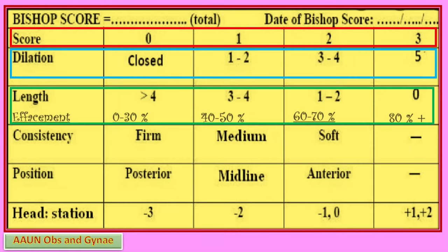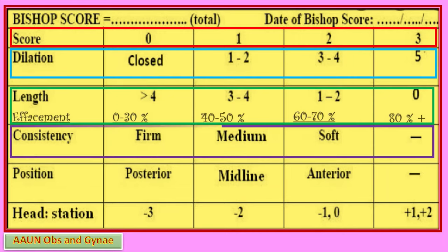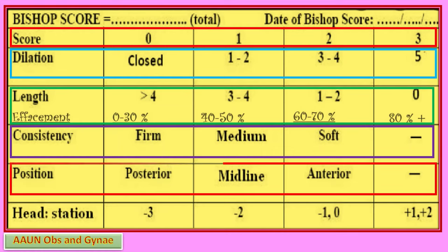Continuing Bishop's score: Consistency scores — 0 for firm, 1 for medium, 2 for soft. Position scores — 0 for posterior, 1 for midline, 2 for anterior. Head station scores — 0 for minus 3, 1 for minus 2, 2 for minus 1 to 0, 3 for plus 1 to plus 2.